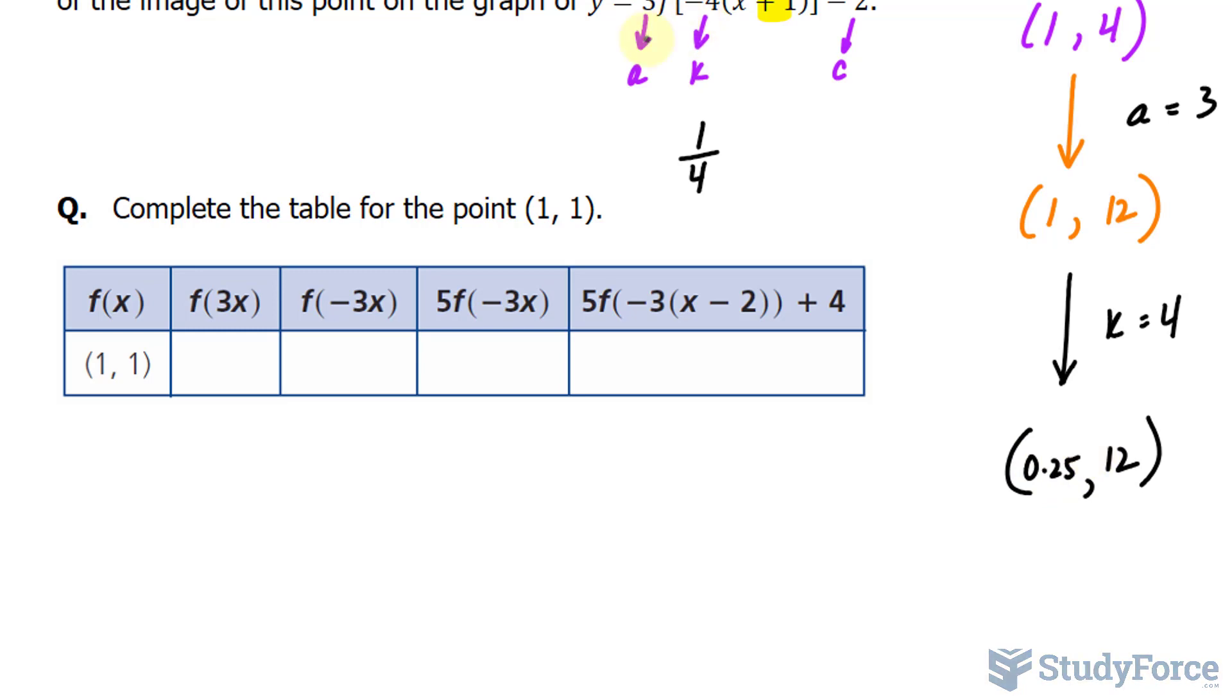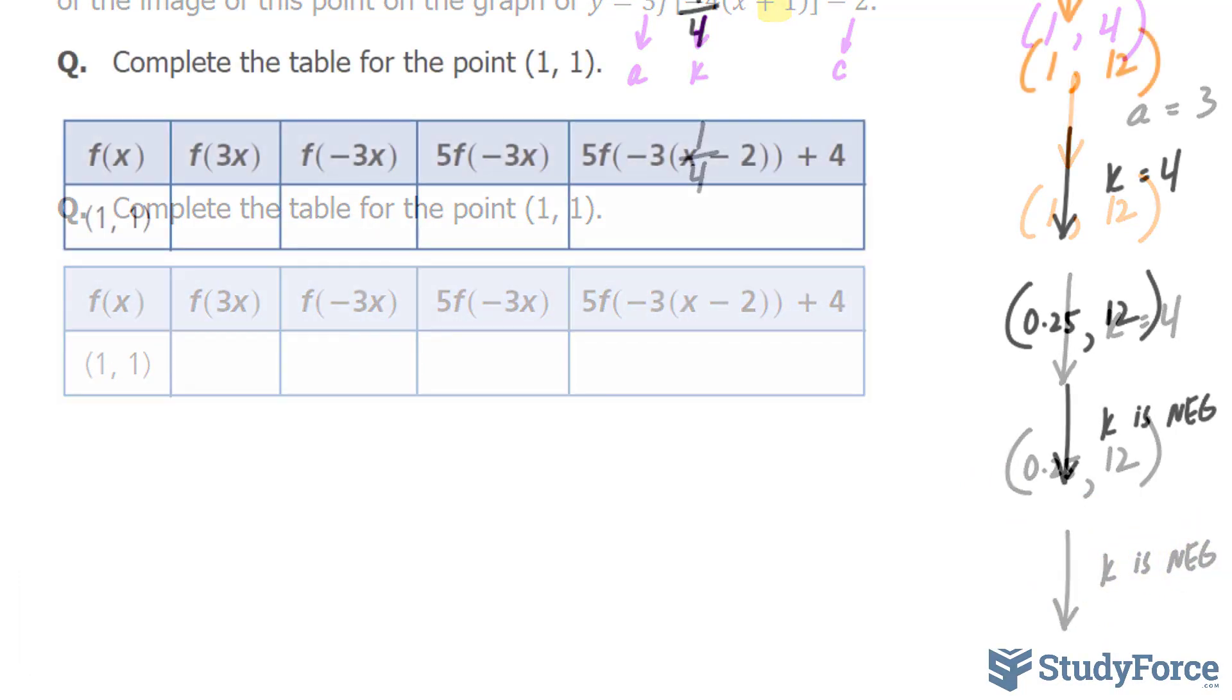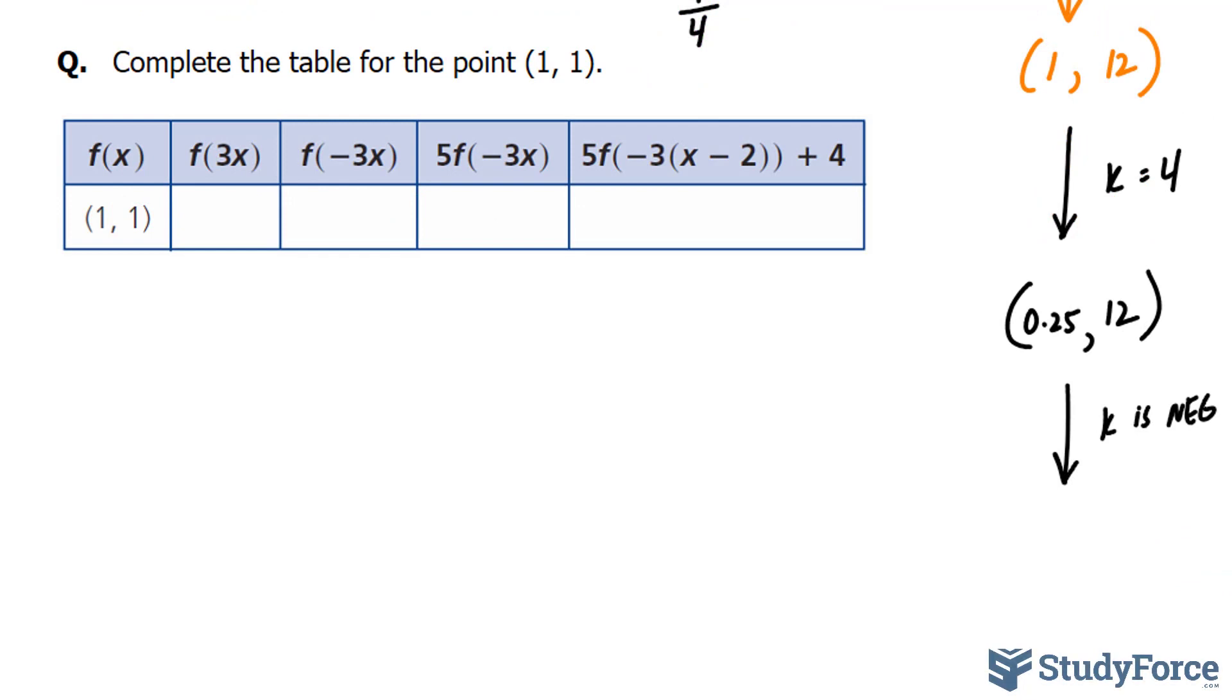Now we want to apply the fact that k is negative. The fact that k is negative means that we have a reflection about the y-axis. So if I apply a k value that is negative, then I'll multiply the x coordinate by negative 1. Multiplying this by negative 1, we get negative 0.25 and 12.